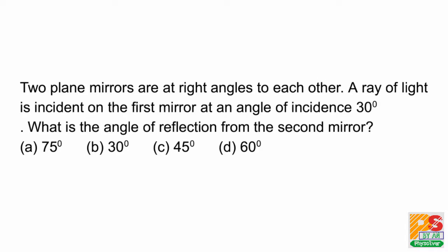Hello students. Two plane mirrors are at right angles to each other. A ray of light is incident on the first mirror at an angle of 30 degrees. What is the angle of reflection from the second mirror?